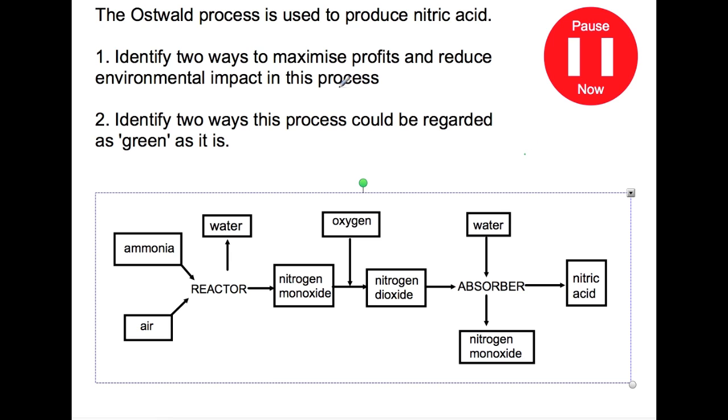Have a look at this graphic of the Oswald process. The Oswald process is used to produce nitric acid. Try and identify two ways that you could maximize profits and reduce environmental impact in this process, and then think about two ways that this process could be regarded as being green as it is. Pause the video now.